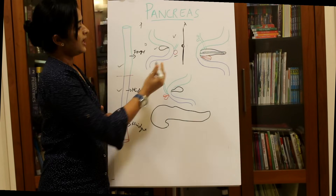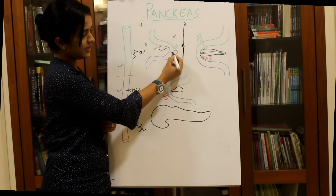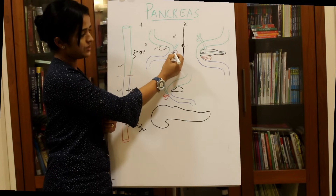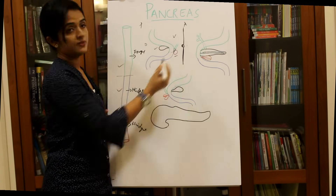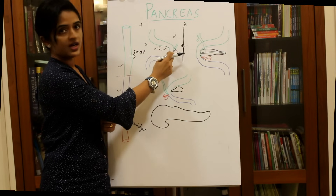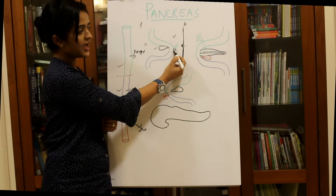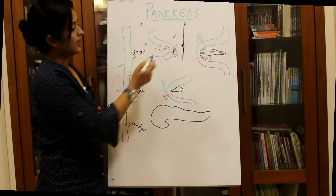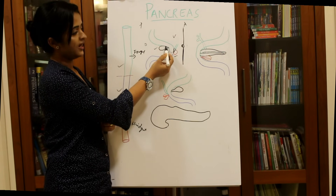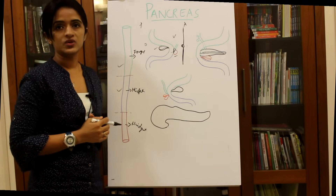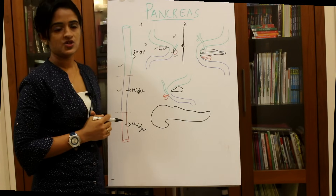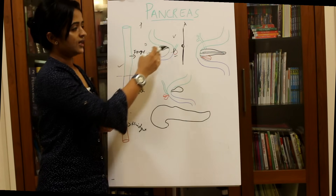At the junction of the foregut and midgut on the ventral aspect, the ventral bud develops, and from this same region the primitive bile duct also develops. From the dorsal aspect, a little bit cephalic to the ventral bud, the dorsal pancreatic bud develops. So from the ventral aspect at the foregut-midgut junction, we have both the primitive bile duct and the ventral pancreatic bud.